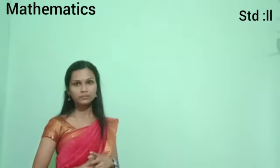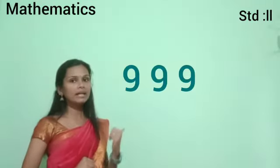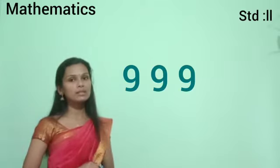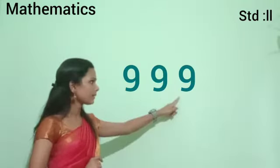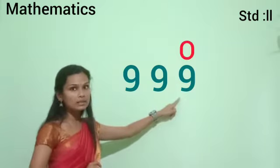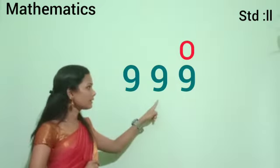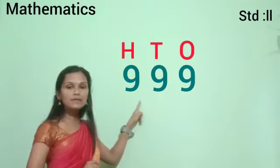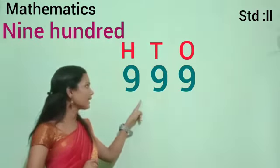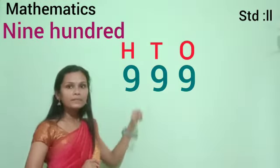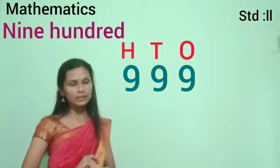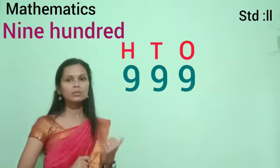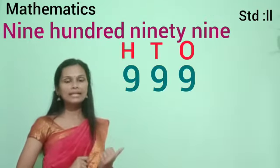Okay. Now let us look at 999. Which number comes in the place of 1's? Yes, the last digit — this 9 is in the place of 1's. Then this 9 is in the place of 10's, and this 9 is in the place of 100's. So: nine hundred, then 10's and 1's taken together — 9 and 9, which is 99. So the number name of 999 is nine hundred ninety-nine. Is it clear?